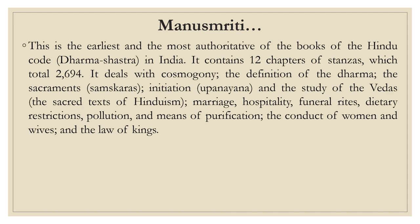Manusmriti is basically considered as a receiver of law. This is the earliest and the most authoritative of the books of the Hindu court, that means Dharmashastra. It contains 12 chapters of stanzas, which include 2694 stanzas. It deals with cosmogony, the definition of dharm, the sacraments (sanskar), initiation (upanayana), the study of the Veda, marriage, hospitality, funeral rites, dietary restriction, pollution, means of purification, the conduct of women and wives, and the law of the king.